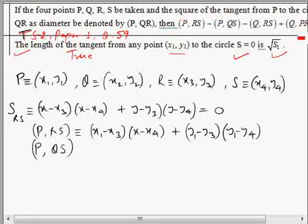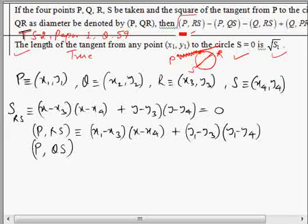Now let's see the first statement. These are four points, and from these points, we are plotting tangents to the circles that are described on taking these points in pair as diameter. This is representing (P,RS), which is representing length of the tangent drawn from point P to a circle that is described on RS as diameter.